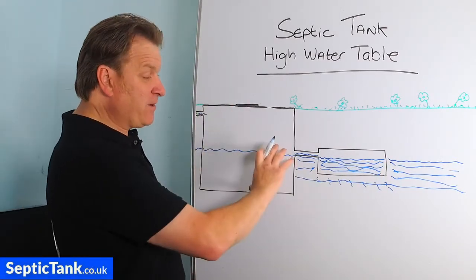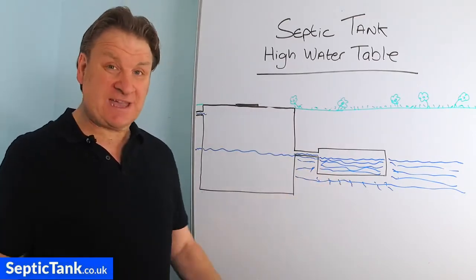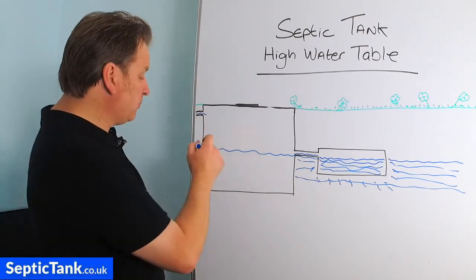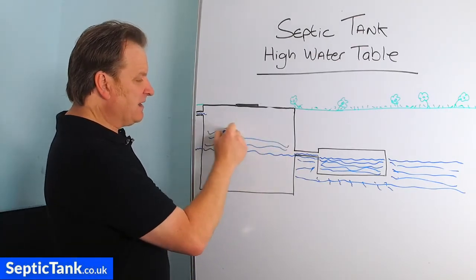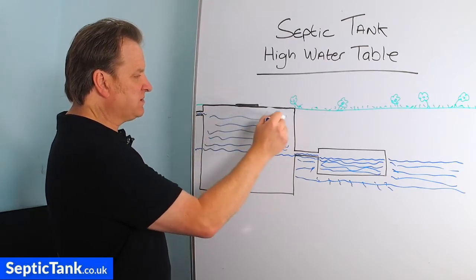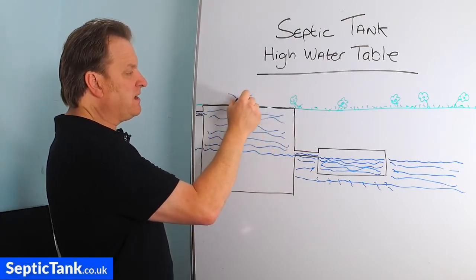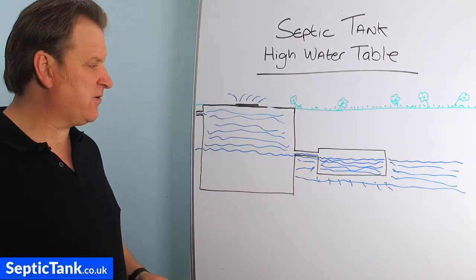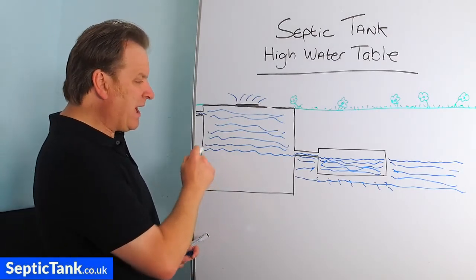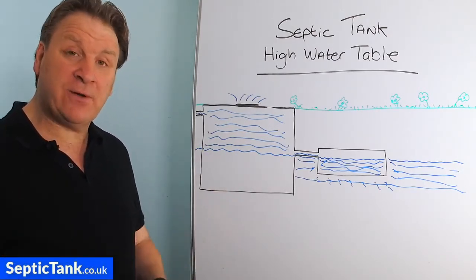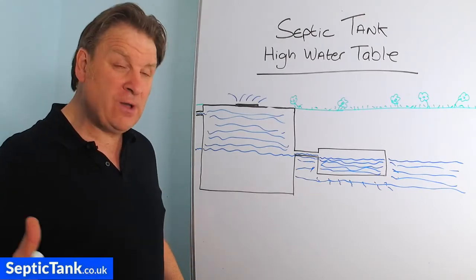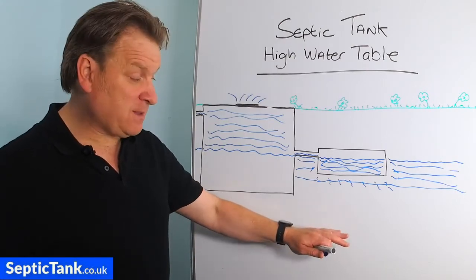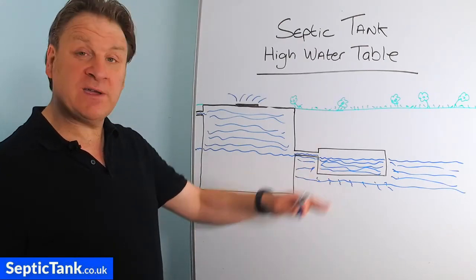The water will literally come out from your septic tank, go into the soak away, and just stay there. As your house produces more and more wastewater, the levels in the septic tank will just rise and rise until it reaches the manhole cover and then spill out or overflow onto your lawn or grass. That's typically what happens if you live in an area with a high water table, or if it's rained a lot and the water table has risen in winter.